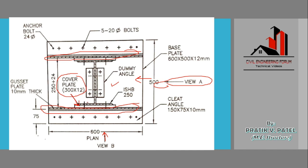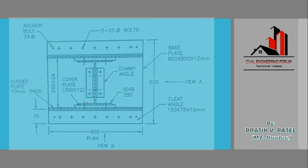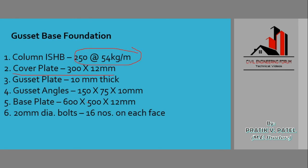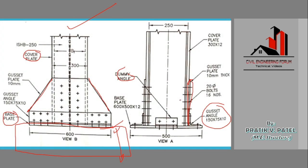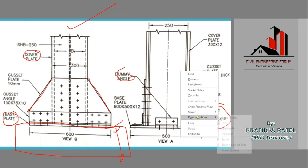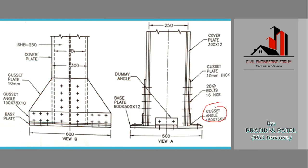The cover plate is the packing plate between the gazette plate and the I-section column. Then we have the gazette plate of 10 mm thickness, and gazette angles of 150 x 75 x 10 mm thickness — these are the connection between the gazette plate and the base plate, connecting both the gazette plate and the base plate.